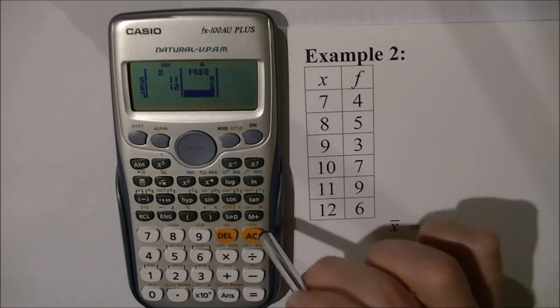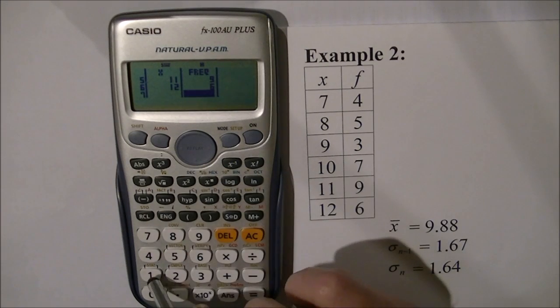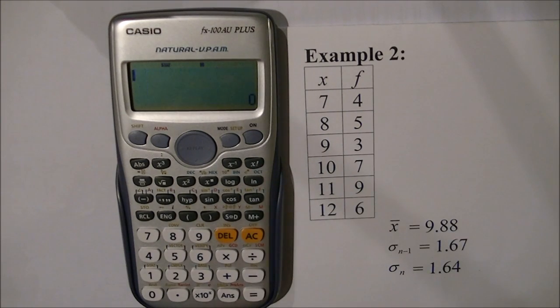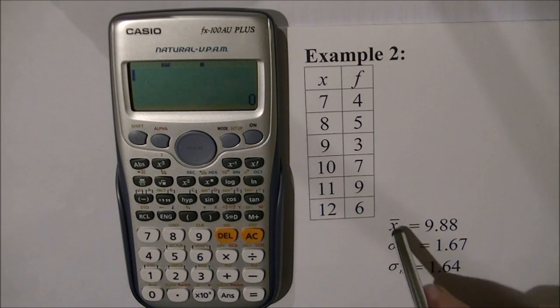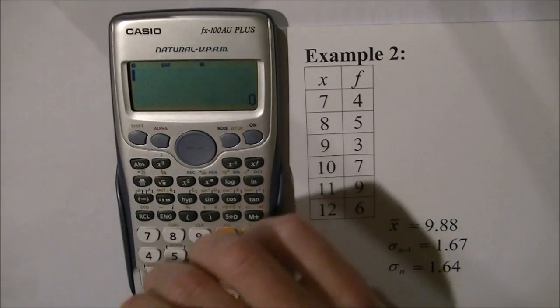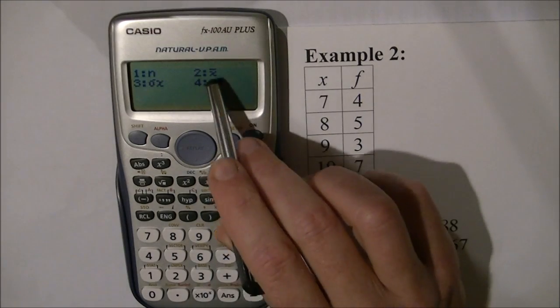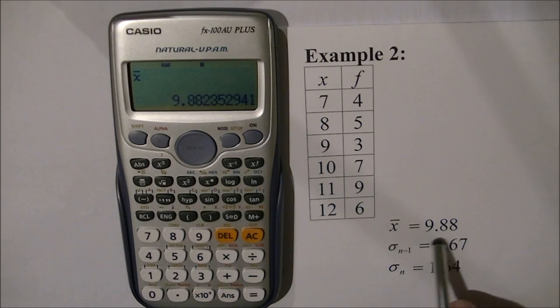Very importantly, press the ALL CLEAR key. Otherwise, I can't access the statistics menu to work on those scores. Press ALL CLEAR. To access the statistics menu to find the mean, press SHIFT 1, then 2 for the average, which is 9.88.